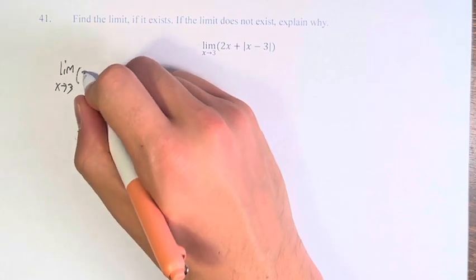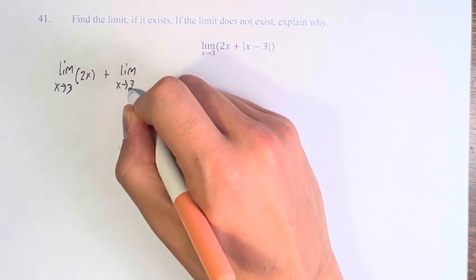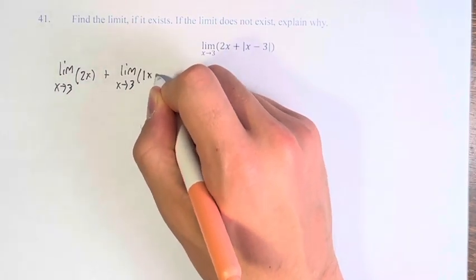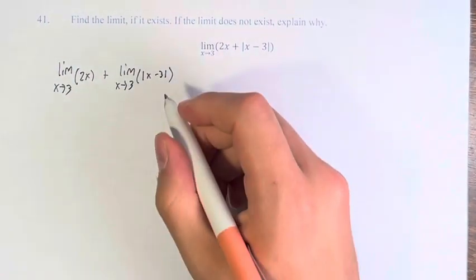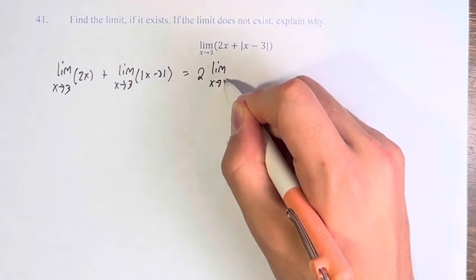So we can use limit laws to say this is the limit of 2x plus the limit of the absolute value of x minus 3. The limit of 2x is 2 times the limit of x.